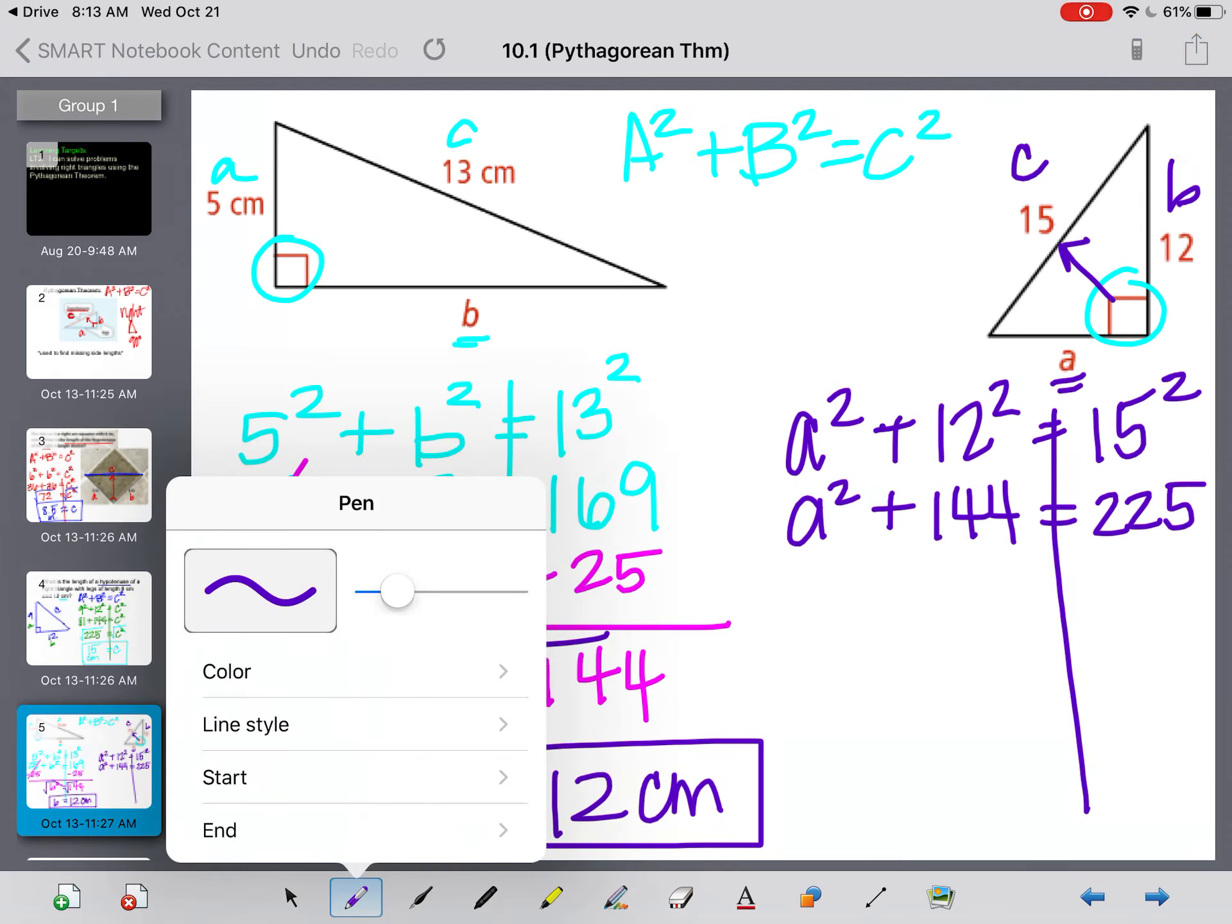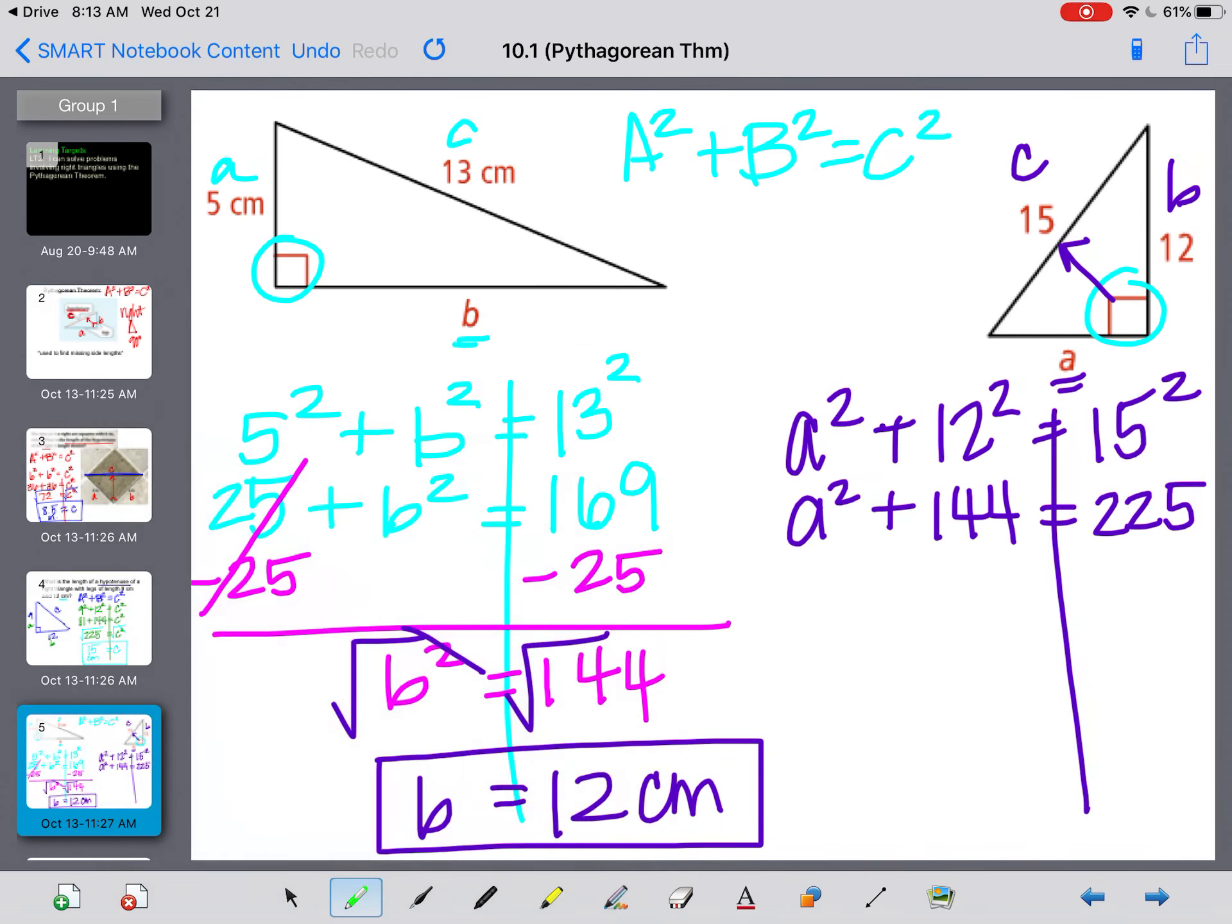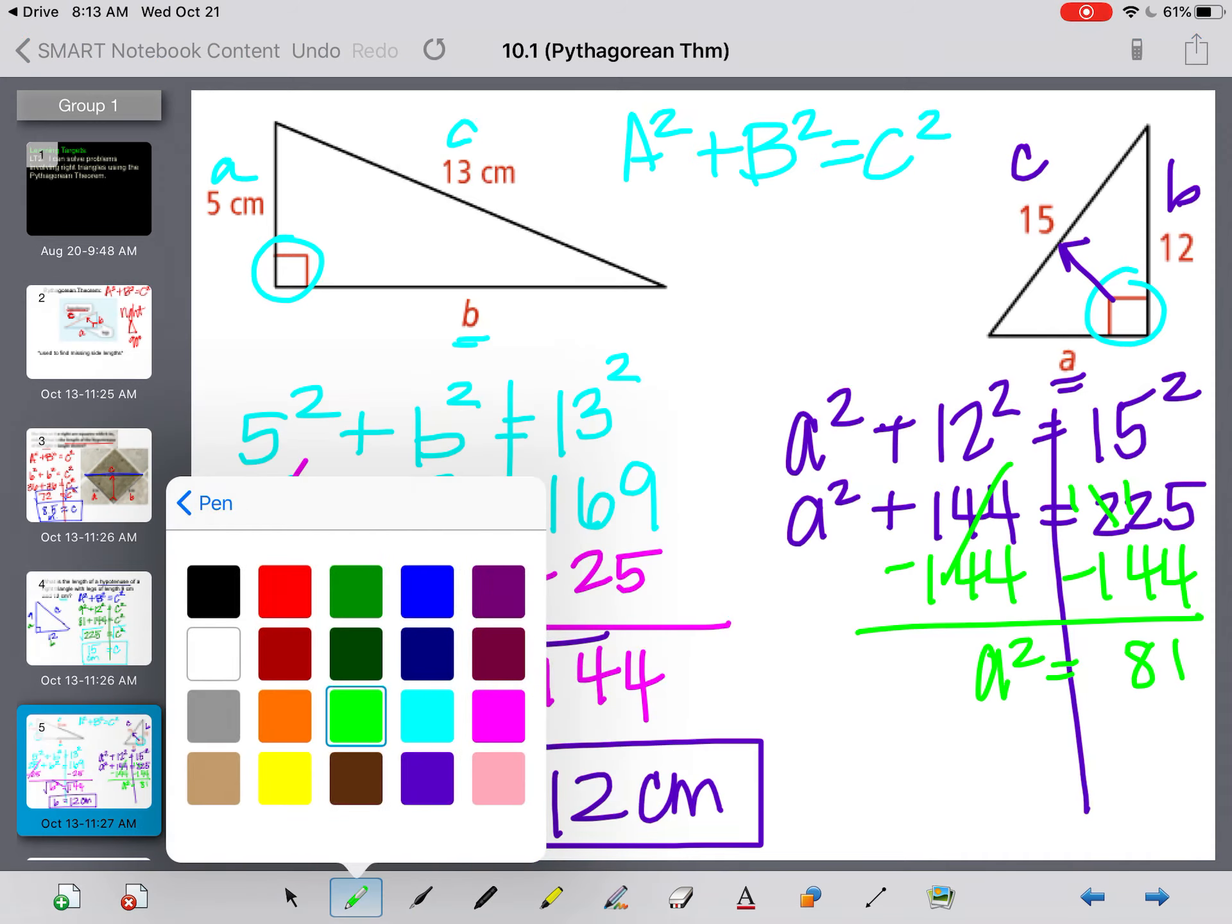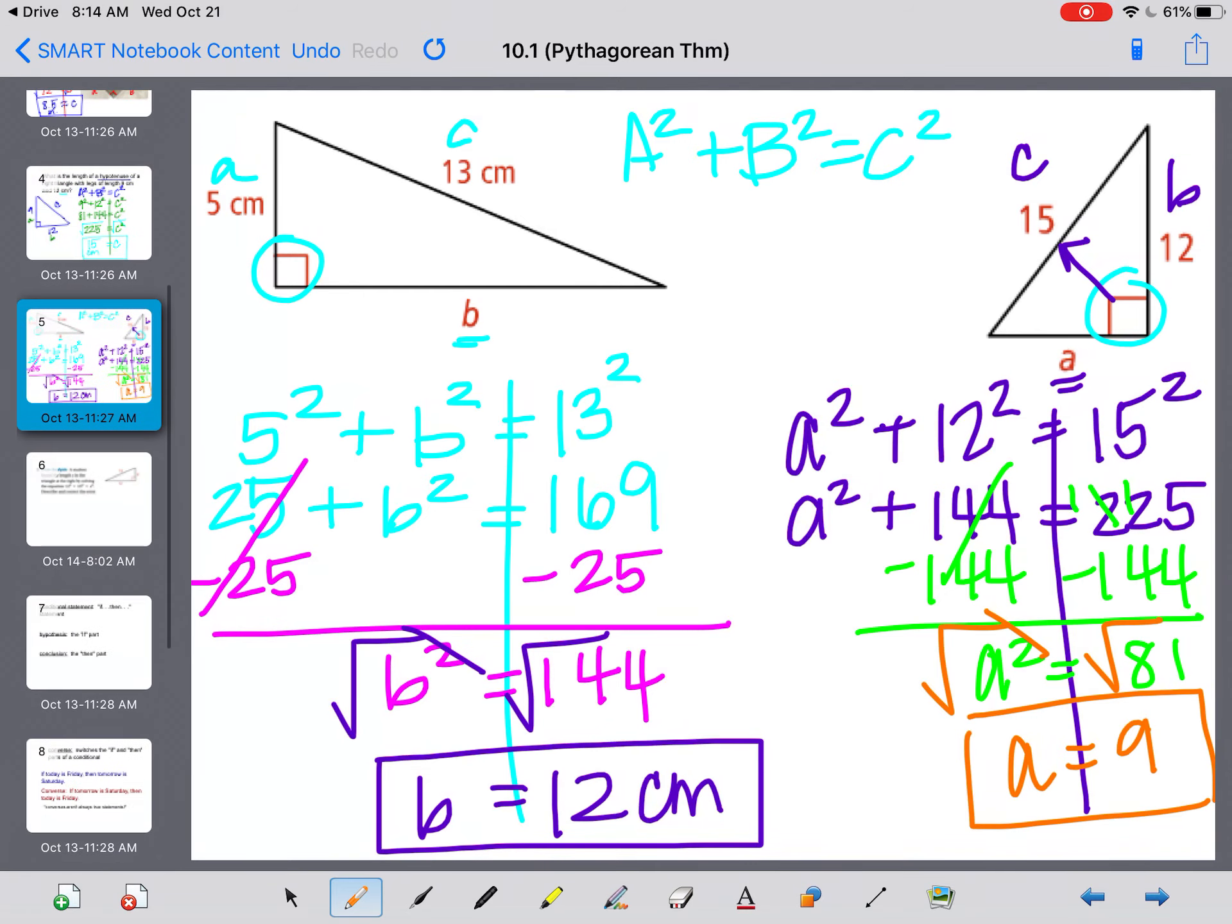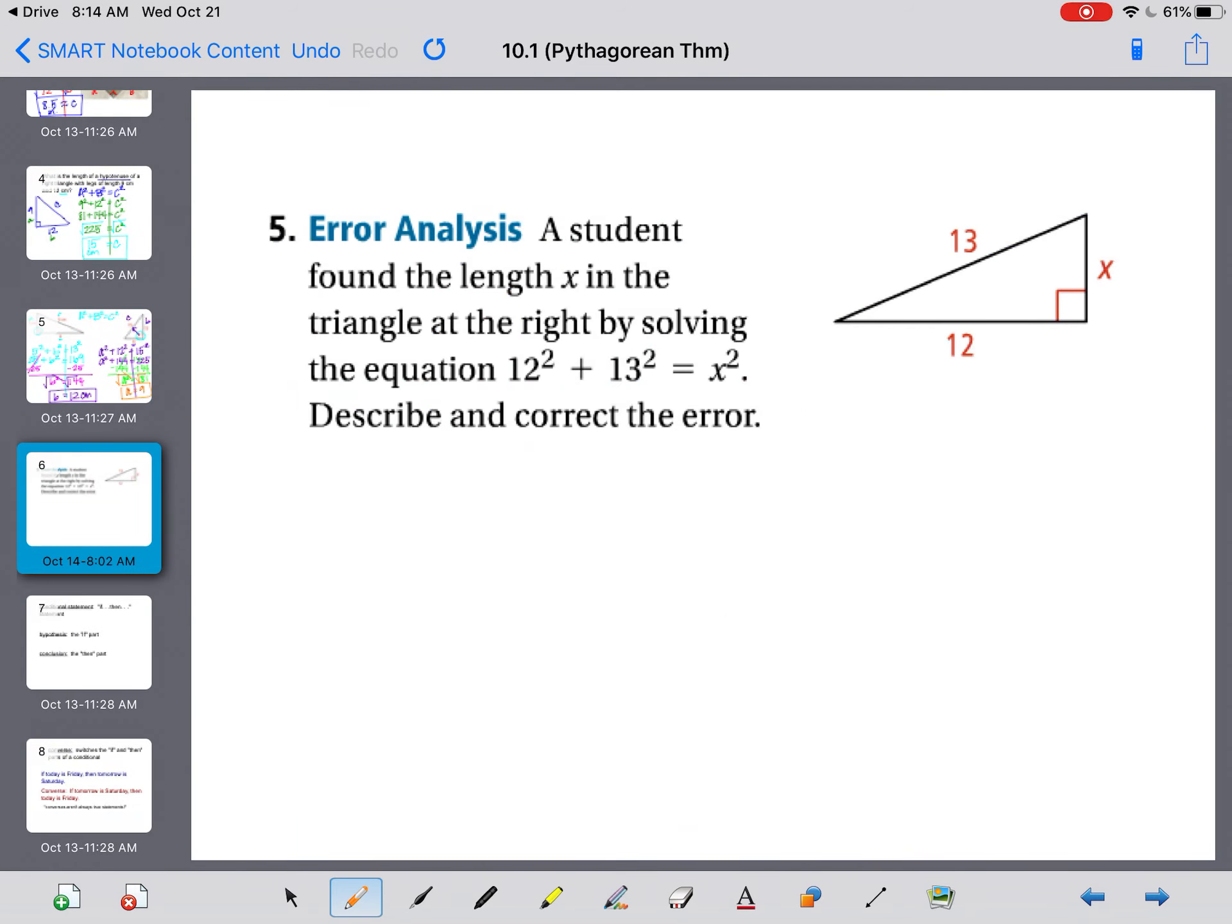Then when I actually square these things, I have A squared plus 144 equals 225. I'm going to subtract 144 so I can start getting that A by itself. A squared equals 81. And when I take the square root on both sides, I find out that A is equal to 9. And this one doesn't have a label, so just 9 units.